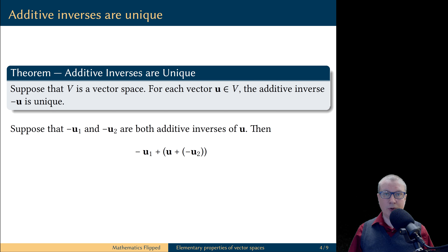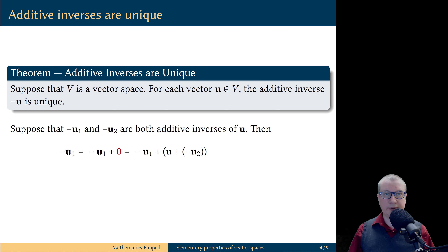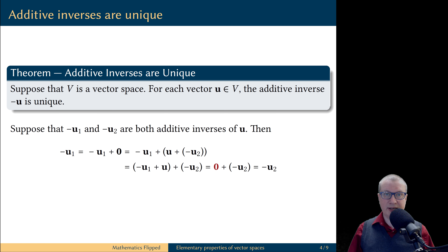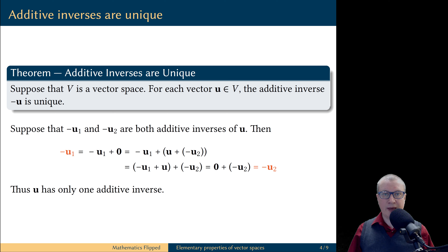To do this, let's look at the following expression. We assumed that negative-u2 is an additive inverse of vector u, so they add to the zero vector. Then negative-u1 plus the zero vector equals negative-u1. The original expression can also be written using the associative property of vector addition. Recalling that negative-u1 is also an additive inverse of u, they too add to the zero vector, and zero vector plus negative-u2 is negative-u2. Looking at the beginning and end, the two additive inverses are equal, proving each vector has only one additive inverse.